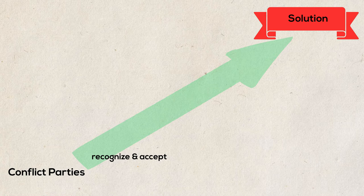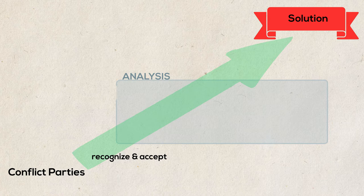In order to achieve a solution in a conflict, the conflict parties must first recognize and accept the conflict. This is followed by an analysis of which people, groups, and social systems are involved, with which interests. Every conflict is characterized by communication, which is why the following three levels of communication must be taken into account.